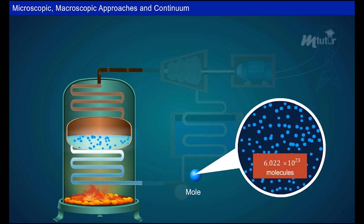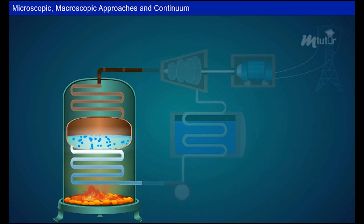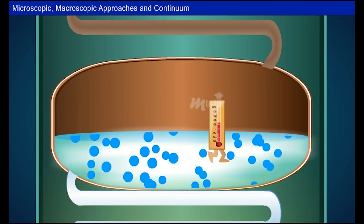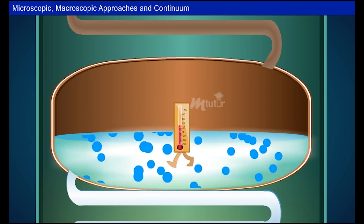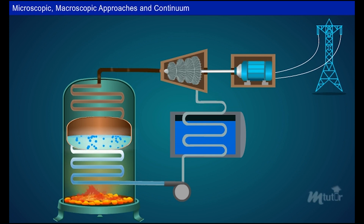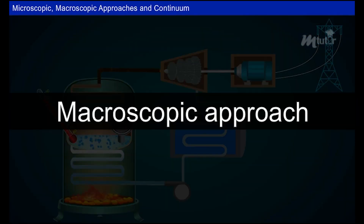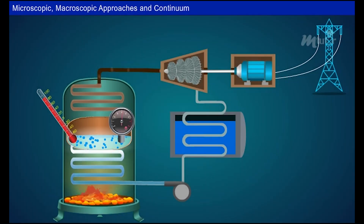It is noted that one mole has 6.022 × 10²³ molecules, so it is highly impossible to measure the behavior of every individual molecule. Hence, it is more convenient to study the behavior of many molecules in matter — for example, pressure and temperature measured easily with the help of measuring instruments.